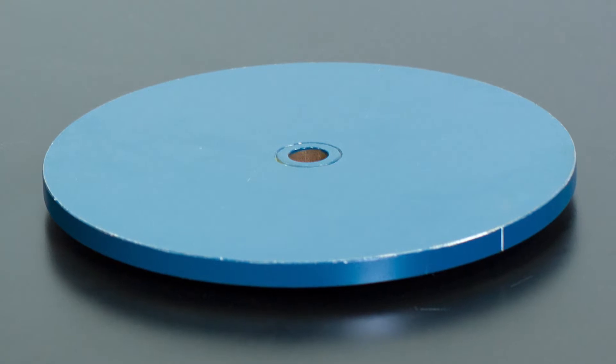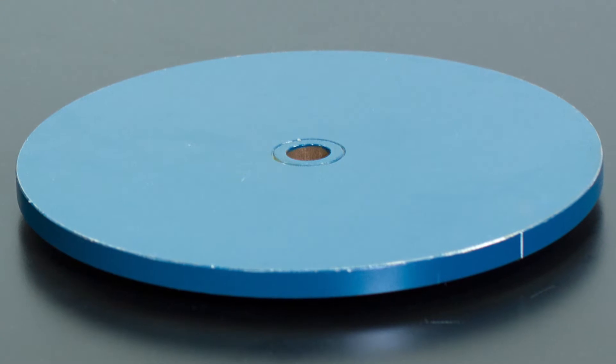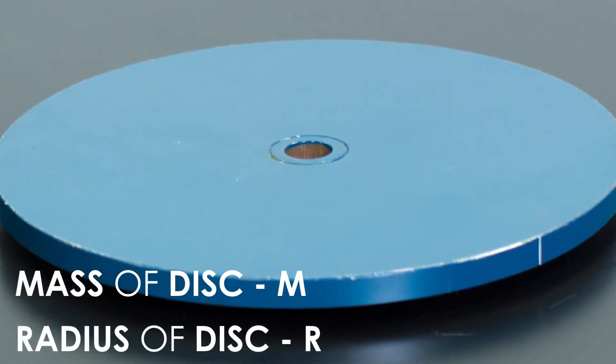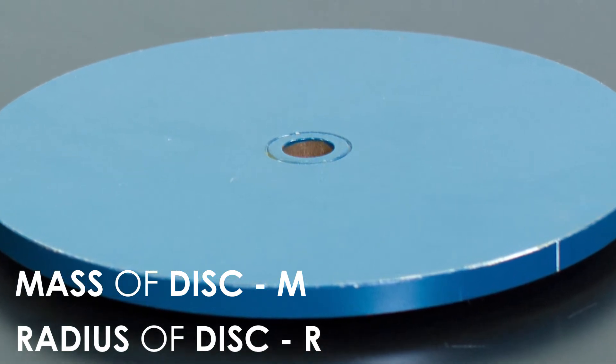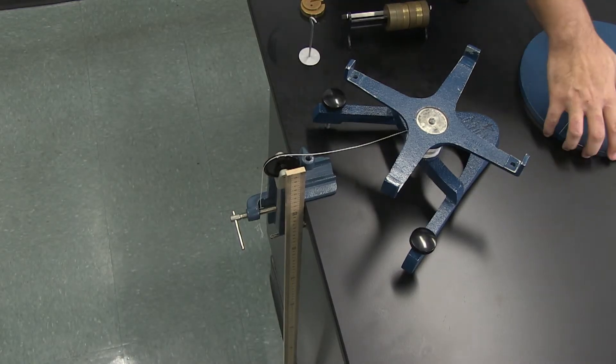In this lab, we'll learn how to determine the moment of inertia of large objects, specifically this disk. If you are told that the mass of the disk is M, and its radius is R, what would be its moment of inertia? Do you think it would be just MR squared?